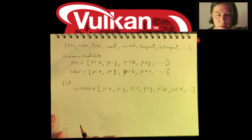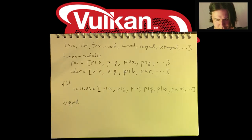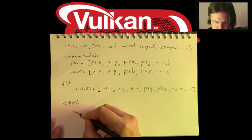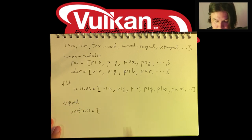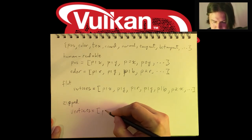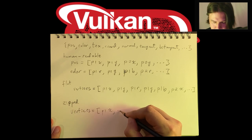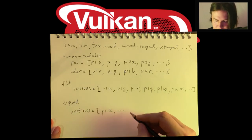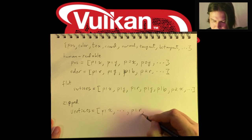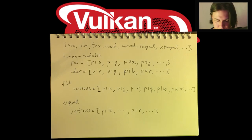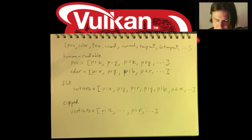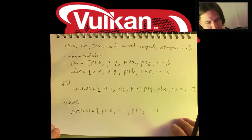Just for variety, there is another method — I'll call it the zipped layout — which is pretty similar to the flat layout. The way this works is we have point one x and then all the positions, and then point one red and all the colors. My preferred method is the flat/vertices method; that's more straightforward.